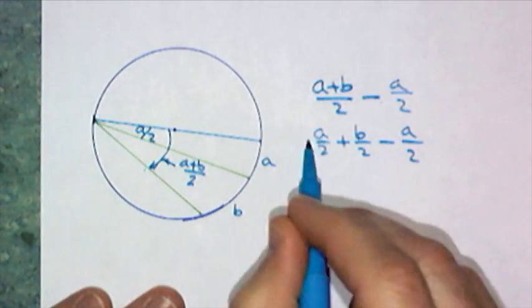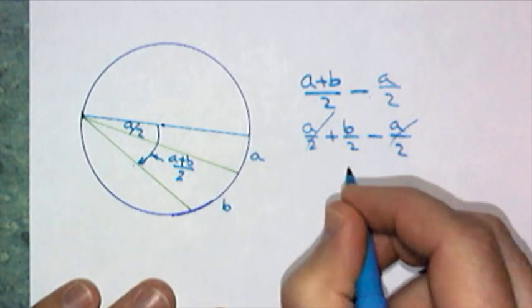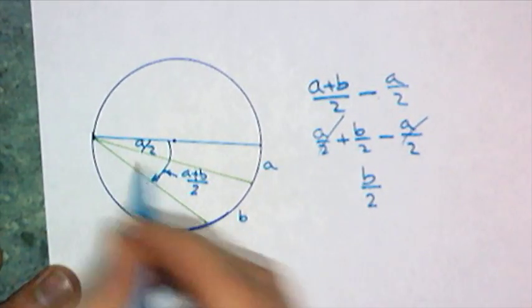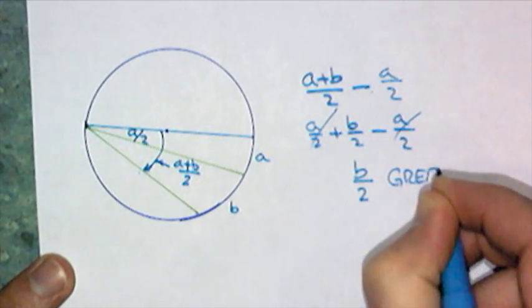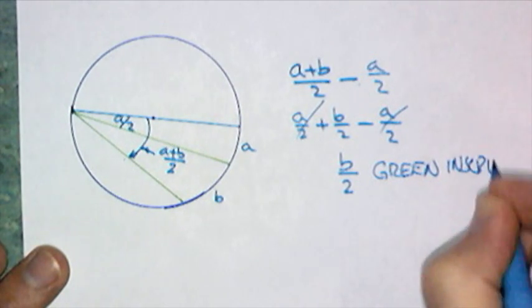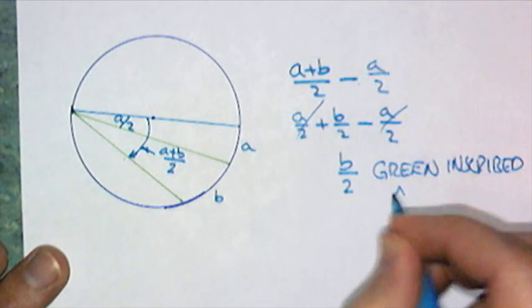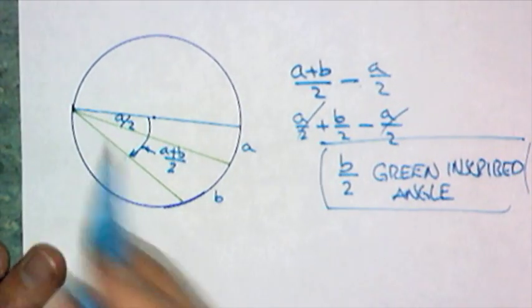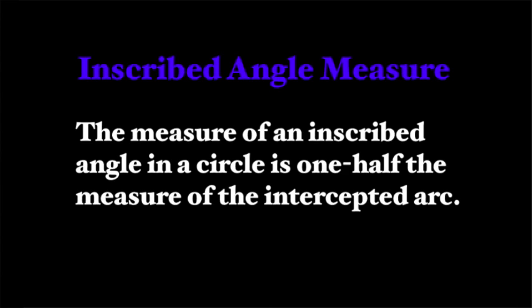That I can break down. That's A over 2 plus B over 2 minus A over 2. So eliminating those leaves me nothing but B over 2. And yet again, it worked. It worked for all three cases. So now I'm ready to state my measurement. The measure of an inscribed angle in a circle is one half the measure of the intercepted arc.